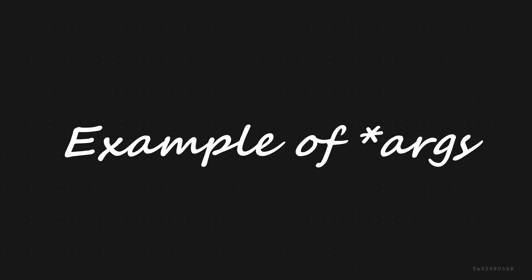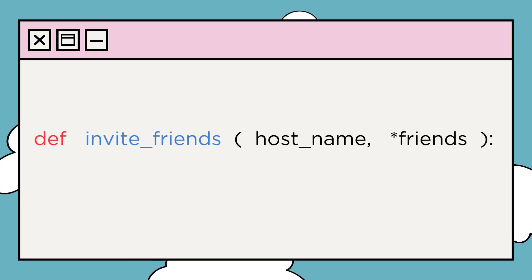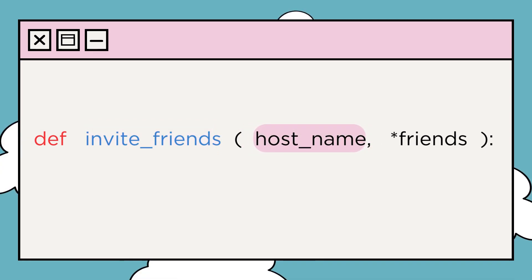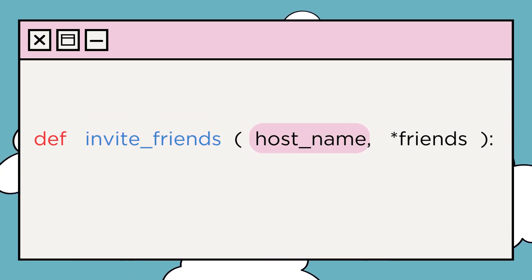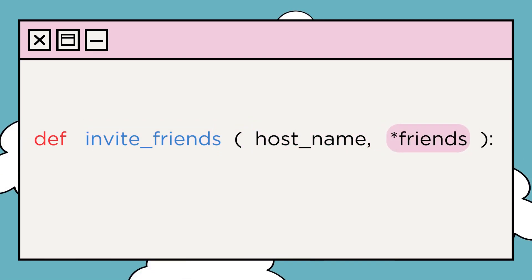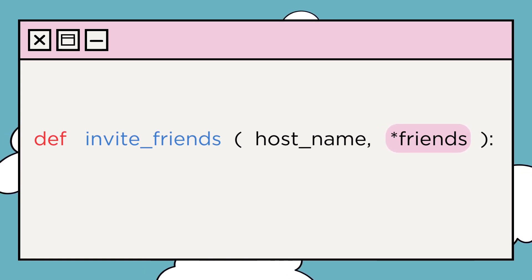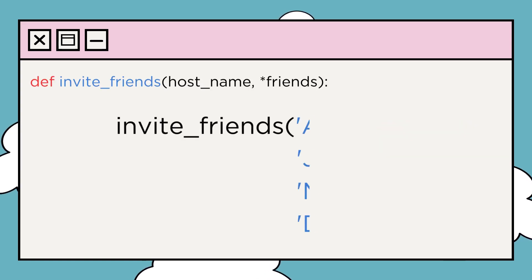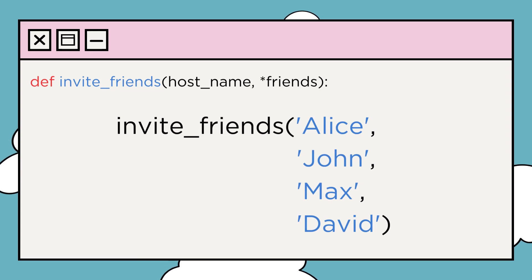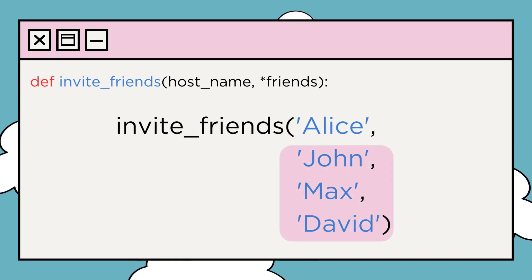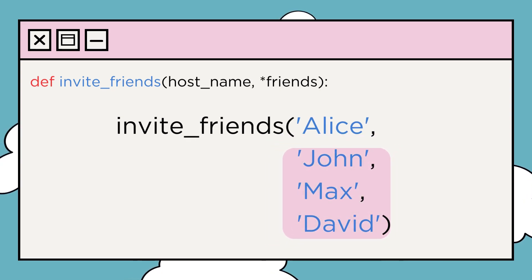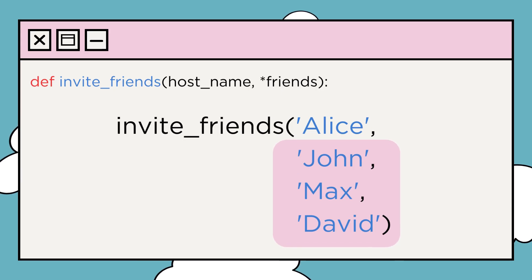Let me show you an example. Here's a function called invite_friends. It takes one required argument, host_name, and then, with *friends, it collects all the extra names you provide. When we call this function like this, Python bundles all the extra names into the friends tuple, so you can print them or do whatever you like.